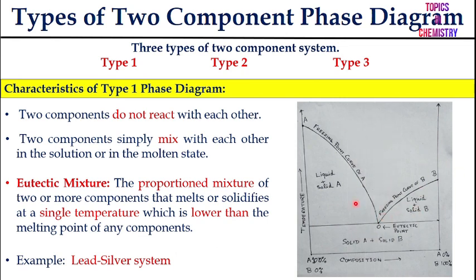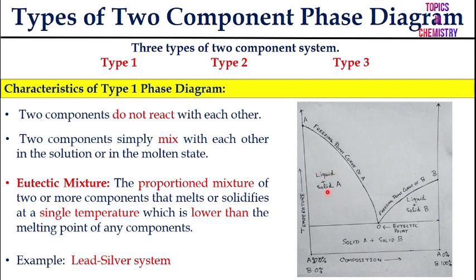The Type 1 phase diagram is a temperature versus composition curve, with pressure constant. Line A represents pure A and line B represents pure B. The freezing point curve of A and the freezing point curve of B meet at the eutectic point — the eutectic mixture. At this point, solid A and solid B are in equilibrium. Above the curves on each side, one solid phase coexists with liquid.